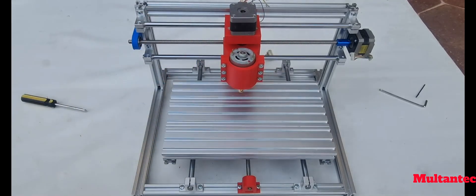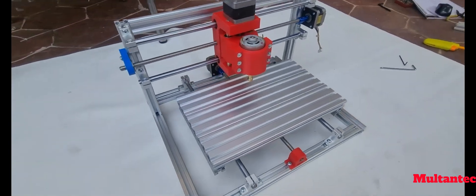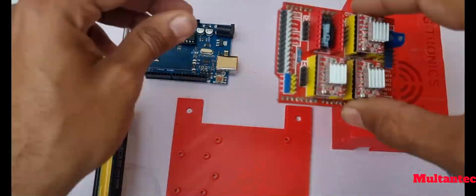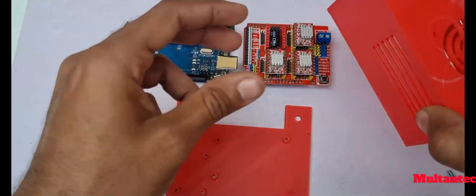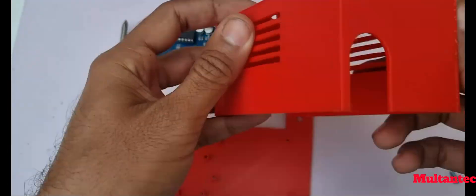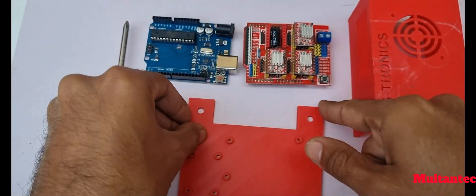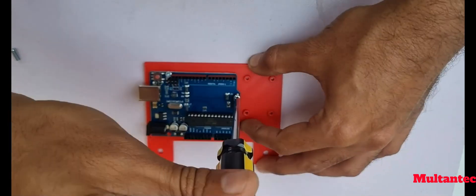So our mechanical assembly is complete now. I am using Arduino Uno microcontroller with CNC shield and A4988 stepper drivers. I have 3D printed AG-tronic CNC enclosure. Mount the Arduino with M3 8mm screws.